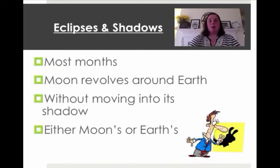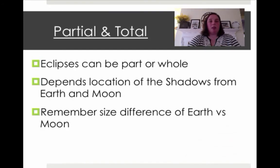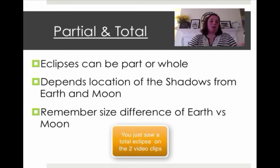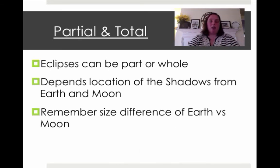What about eclipses and shadows? Most months, the moon revolves around Earth without moving into a shadow at all. But you can have something called a partial or total eclipse. It can be whole or partial, and it totally depends on the location of the shadow for the Earth and moon. That has to do with size — the Earth is obviously four times bigger than the moon, so its shadow would be much bigger.